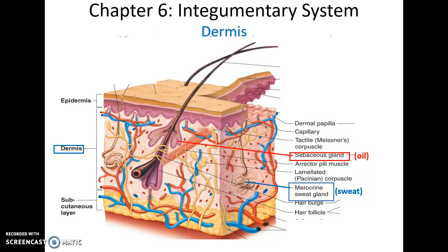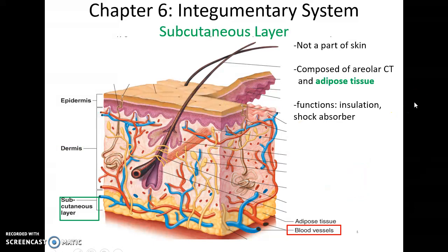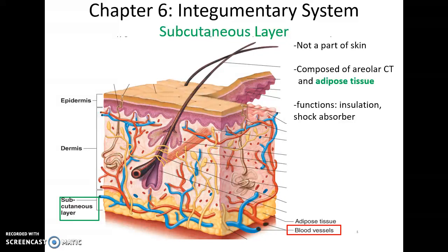Associated with every hair follicle are the sebaceous glands, or oil glands, which produce oil for the skin and hair. Throughout all of the skin we have eccrine sweat glands — the normal sweat glands that have ducts going to the surface and release what we think of as sweat. Below the dermis is the subcutaneous layer, which is primarily adipose tissue and some areolar connective tissue. Its functions include insulation to prevent heat loss and acting as a shock absorber. Blood vessels and nerves also move through the subcutaneous layer into the dermis.